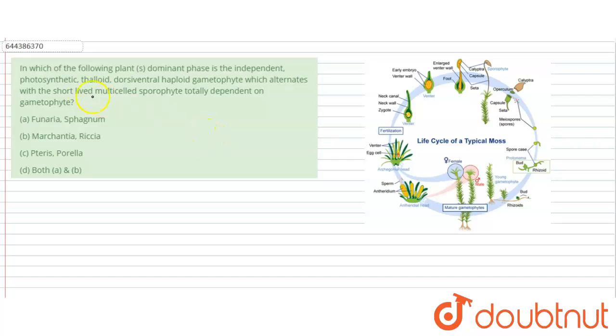The question says, in which of the following plant dominant phase is the independent photosynthetic haploid gametophyte? So the dominant phase is haploid gametophyte which alternates with the short-lived multicellular sporophyte, totally dependent on gametophyte.